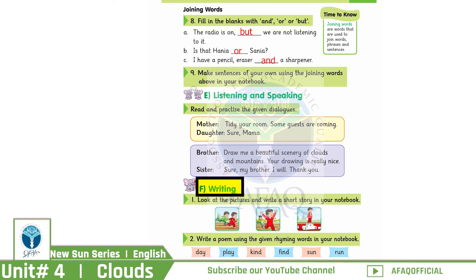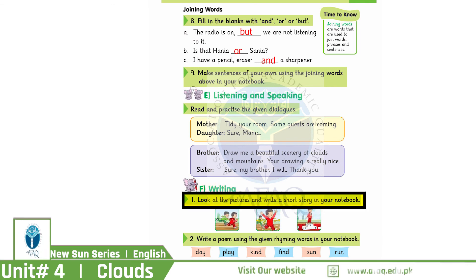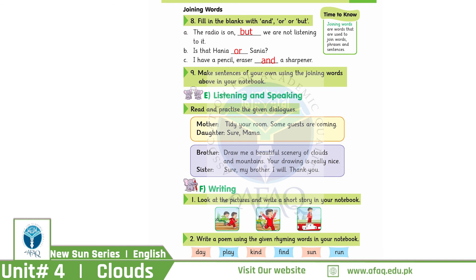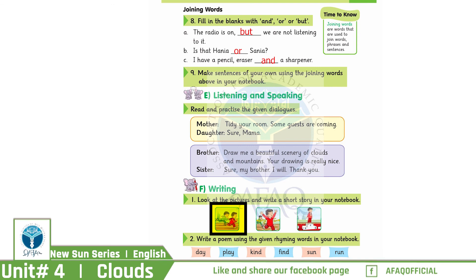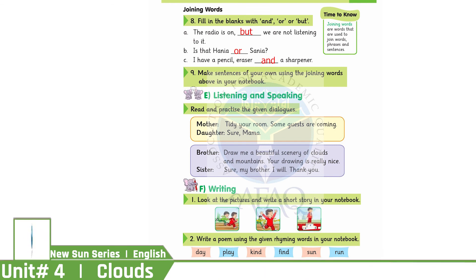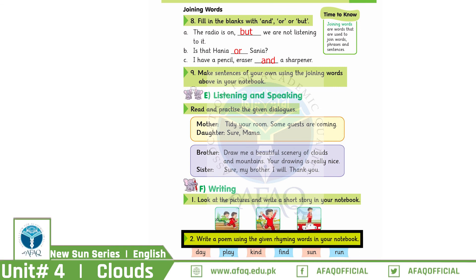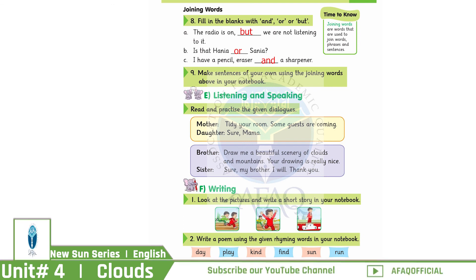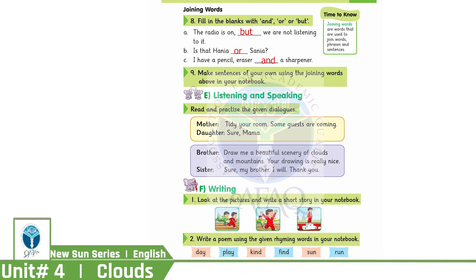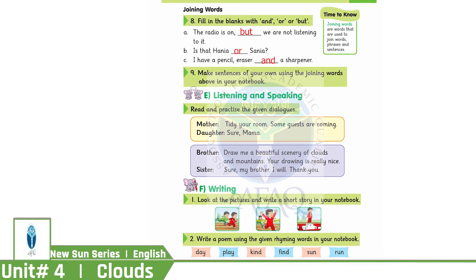Our last task is Writing on page number 28. Look at the pictures and write a short story in your notebook — describe what is happening in the first, second, and last picture in sequence and give it the form of a story. Then write a poem using the given rhyming words in your notebook: day, play, kind, find, son, run. These are rhyming words — use them to write a poem. This completes our Unit 4. Inshallah we will meet again for the next lesson. Allah Hafiz.